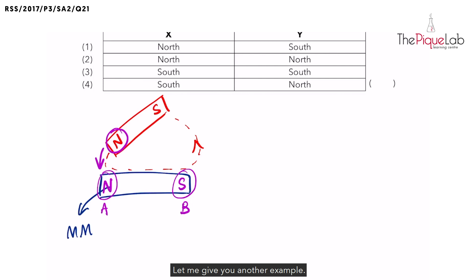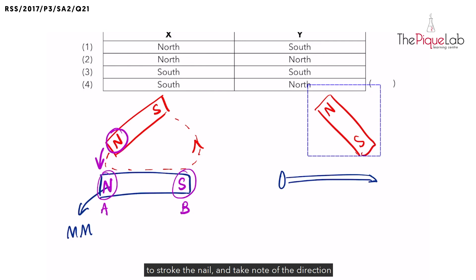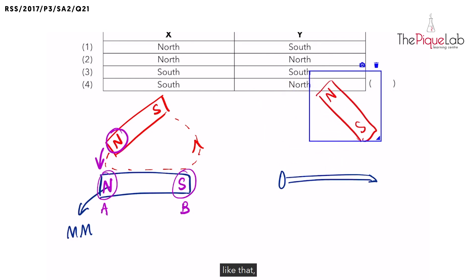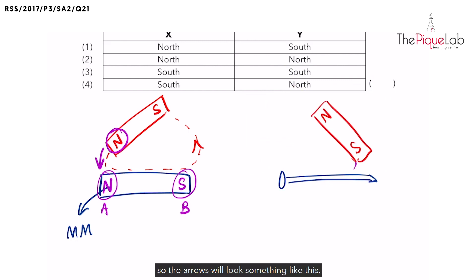So let me give you another example. Let's say I have an iron nail. And this time, I'm using the South Pole of a bar magnet to stroke the nail. And take note of the direction at which this stroking method is carried out. For example, if I'm stroking it in this direction like that. So the arrows will look something like this.